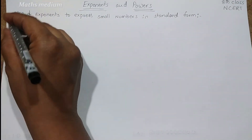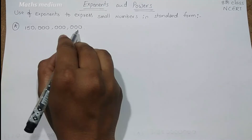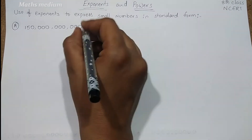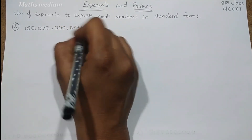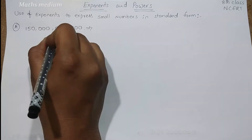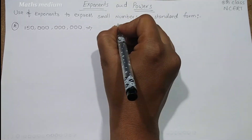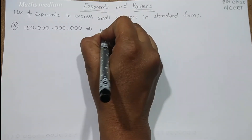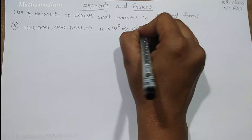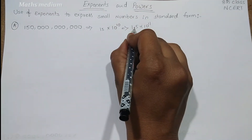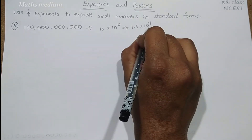If you take any bigger number — this is a large number I wrote. How are we going to take this number into standard form? There are 10 zeros, so we can write it as 10 power 10 into 15. If you want to make it into a decimal number, that becomes 1.5 into 10 power 11. Because of the decimal point, we are extracting one multiplication of 10, so that's why I am writing it like this.